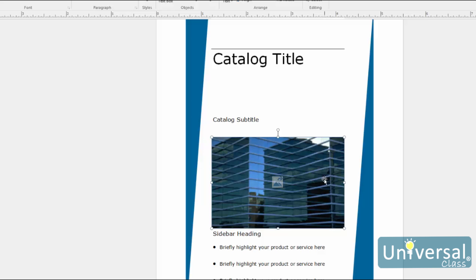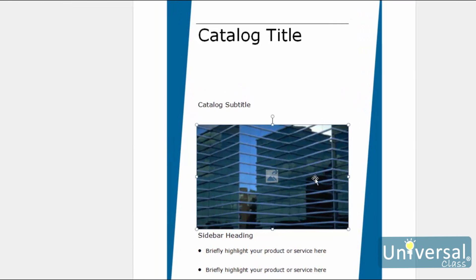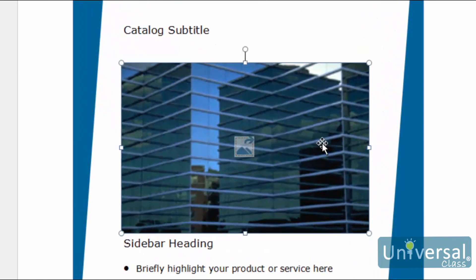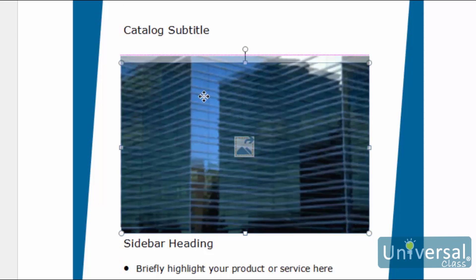To move an object, click on the object to select it. Next, hover your mouse over the bounding box until you see a 4-way arrow, as you can see here. Once you see this arrow, you can click and drag to move the object to a different location.